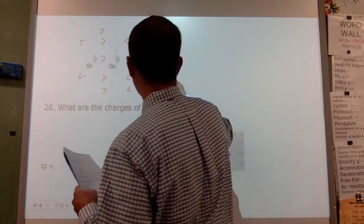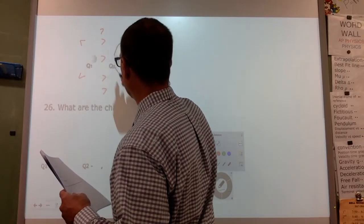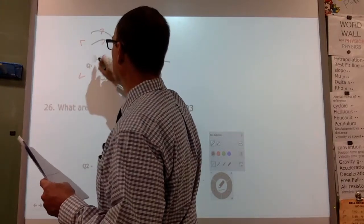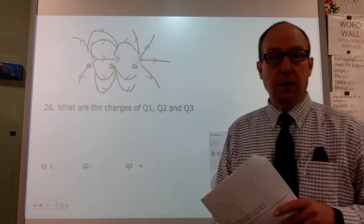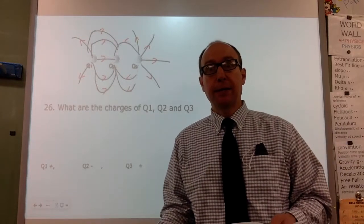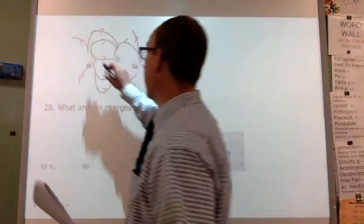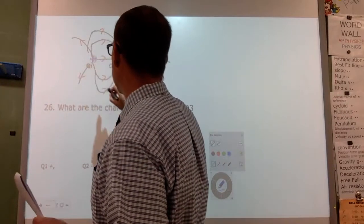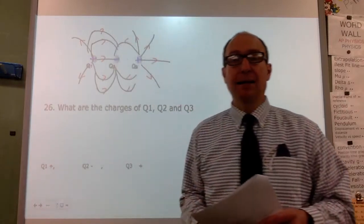Our rule for electric field lines is that they go away from positive and they go towards negative. Since Q1 has lines going away, it is a positive charge. Since Q2 has lines going towards it, it's negative. And since Q3 has lines going away, it's positive.